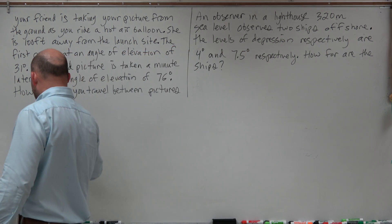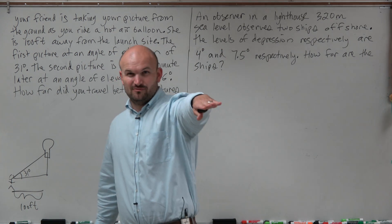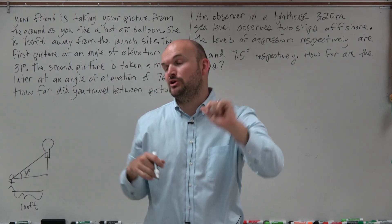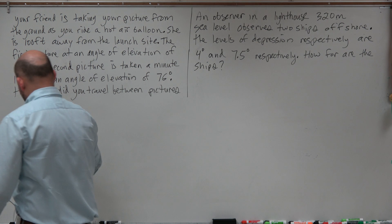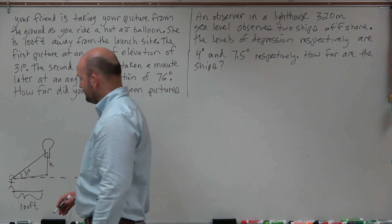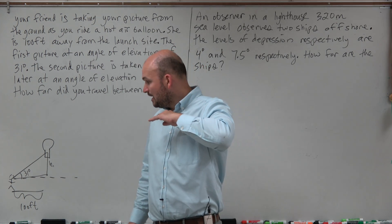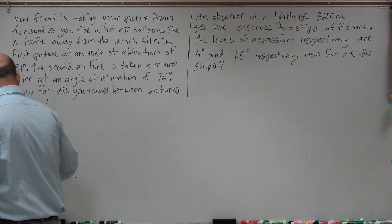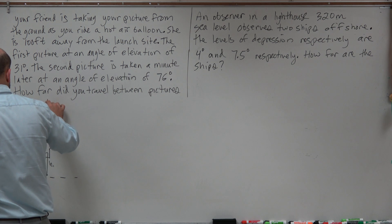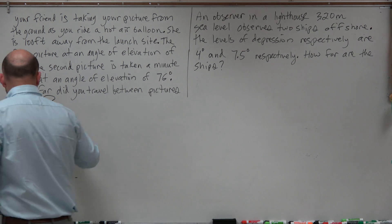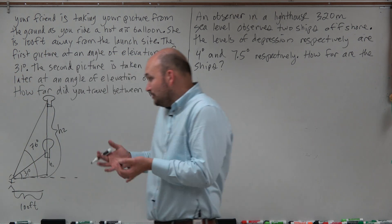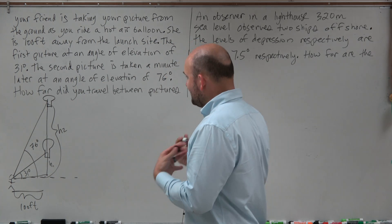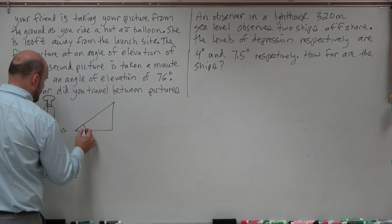We know the angle of elevation, but we don't know how far you are along the horizontal line of sight — because when you're taking a picture looking up, your horizontal sight line defines the angle of elevation. I'm going to draw a horizontal line for the angle of elevation. We don't know your height here, which I'll call h1 — that is how high you are for your first picture from the horizontal sight line. The second picture is taken at an angle of elevation of 76 degrees, and that distance we'll call h2.